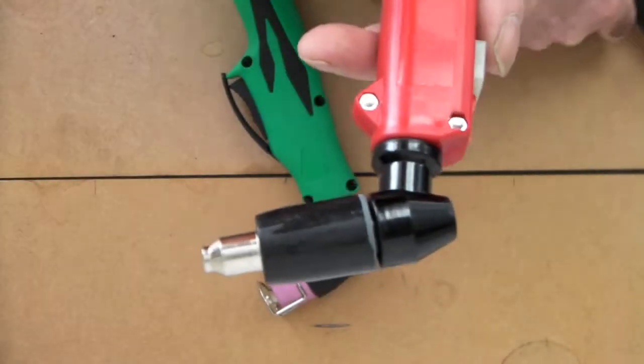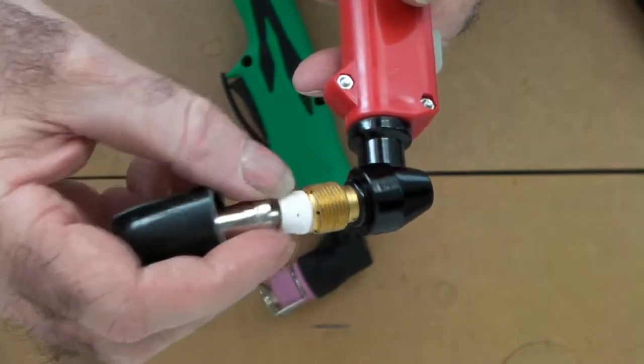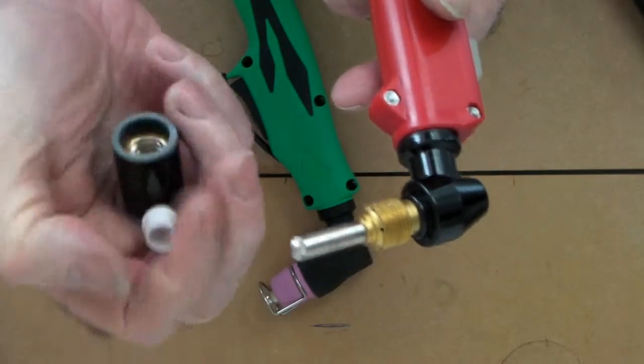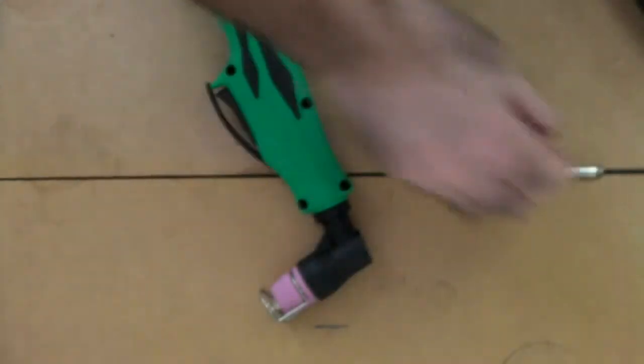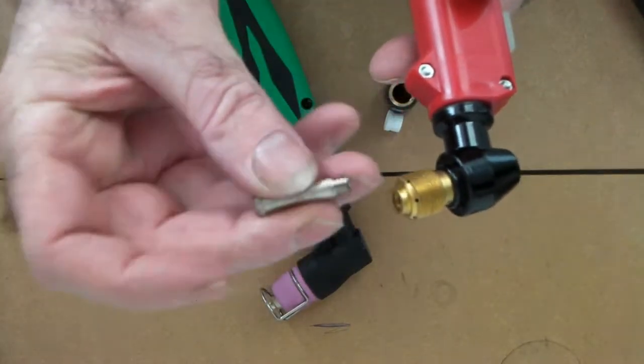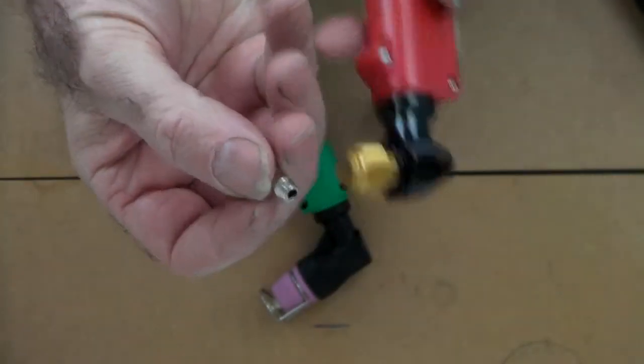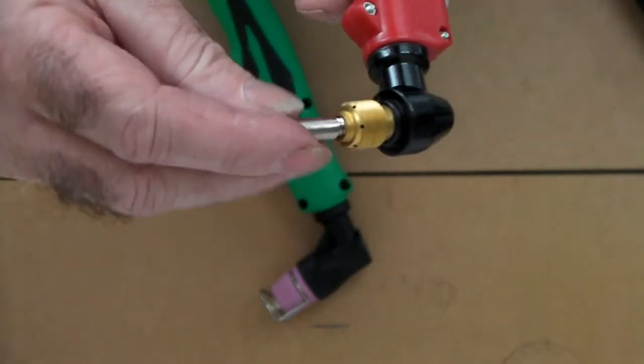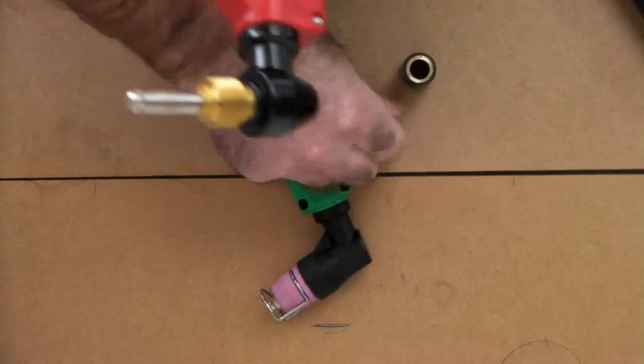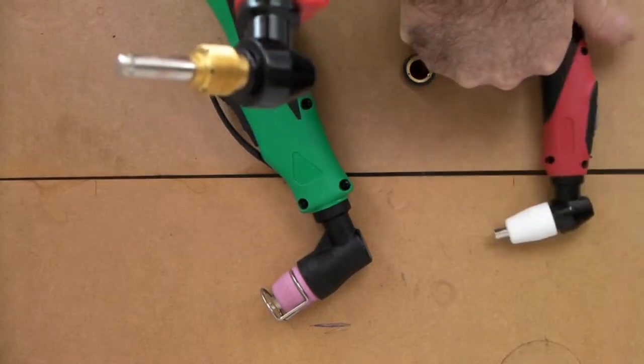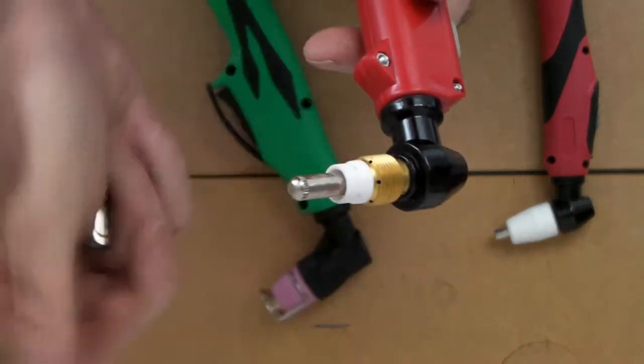The SG-51, although it looks much the same as the PT-31 torch, the consumables are a little bit more expensive for this. The disadvantage of this is that the electrodes on this are only single use. You can't turn them around because they have a thread on the end that screws in, so you can only basically use them once and they're dearer than the PT-31.